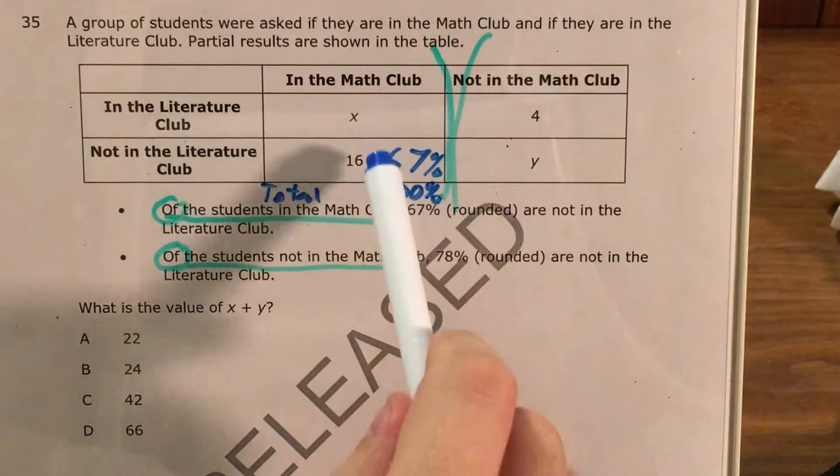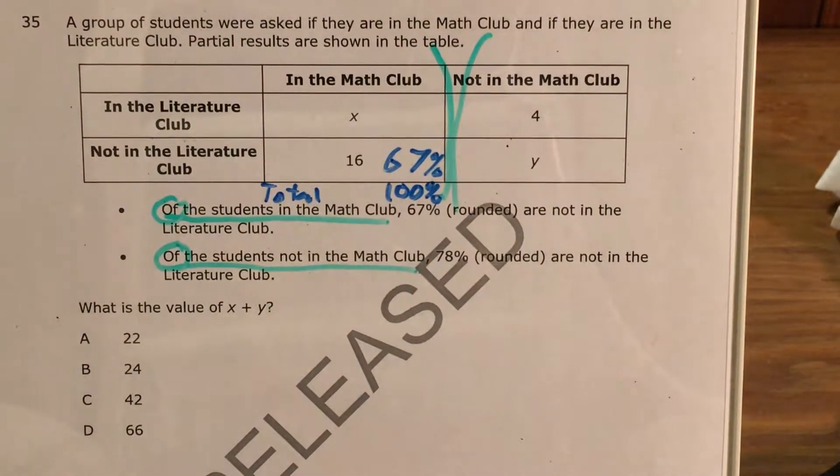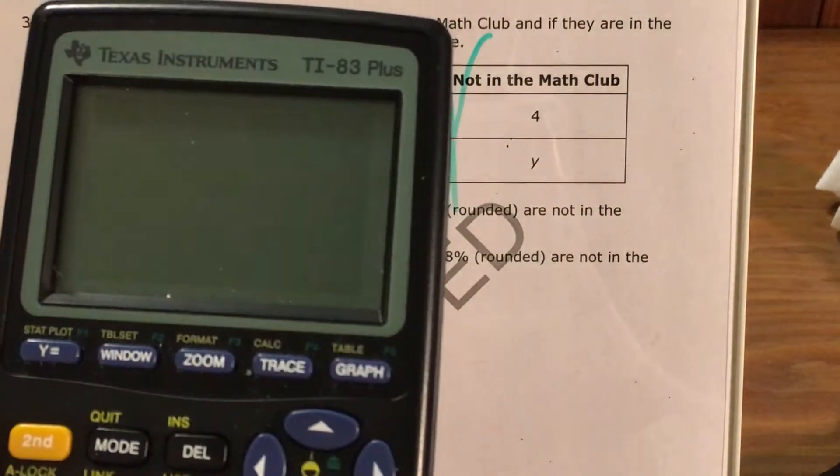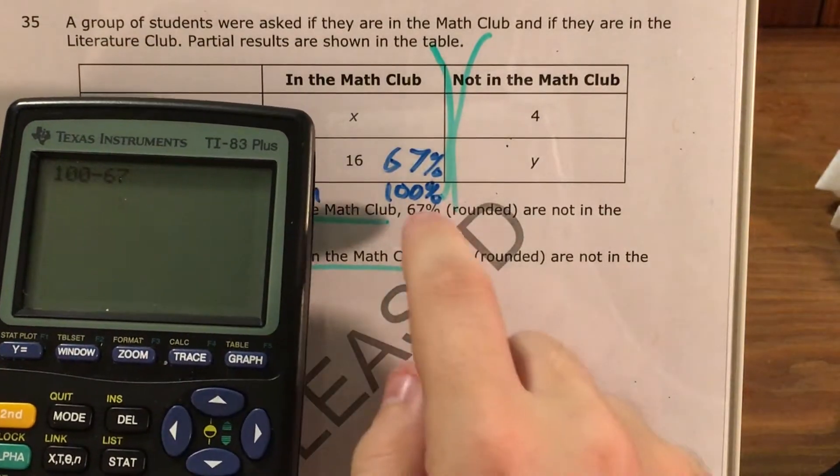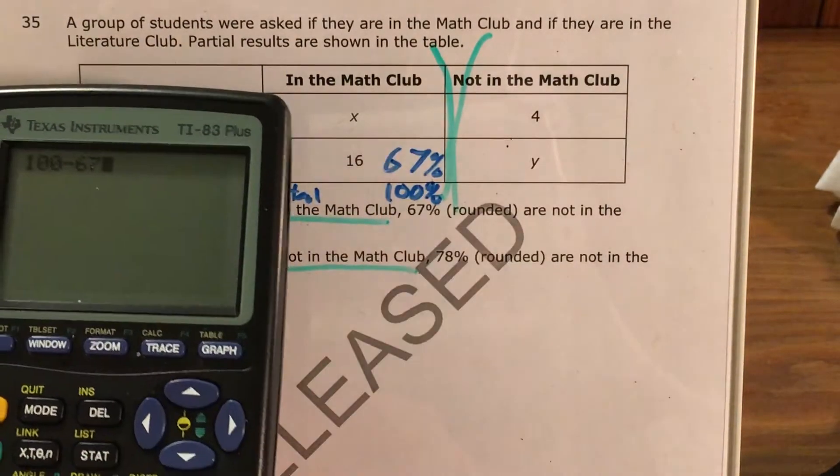So I know that this box plus this box equals my total. I know that something plus 67 equals 100, which means I know, using fact families or equation properties, that 100 minus 67 equals this blank.